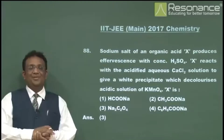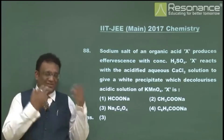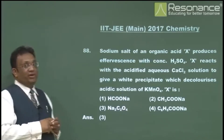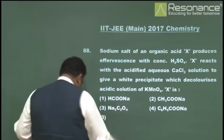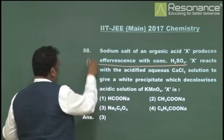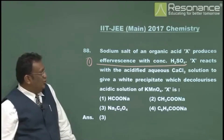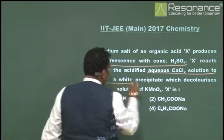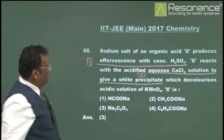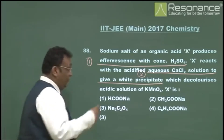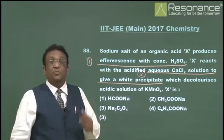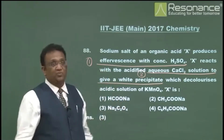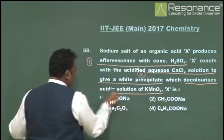Question 88: a sodium salt of organic acid X produces effervescence with concentrated H₂SO₄. X reacts with acidified aqueous CaCl₂ to give a white precipitate. The precipitate decolorizes acidic KMnO₄, meaning the precipitate contains a reducing agent. Calcium ions are not reducing agents, so the anion must be the reducing agent. This is the third key criterion.